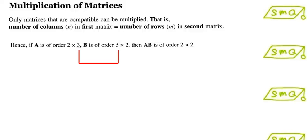Only matrices that are compatible can be multiplied. The number of columns in the first matrix must be equal to the number of rows in the second matrix. Therefore, if A has the order 2 times 3 while B has the order 3 times 2, then the multiplication of AB would be the order 2 times 2.